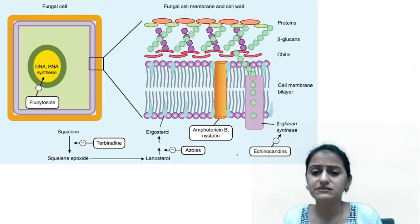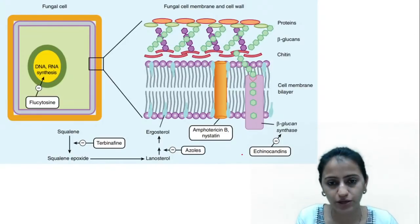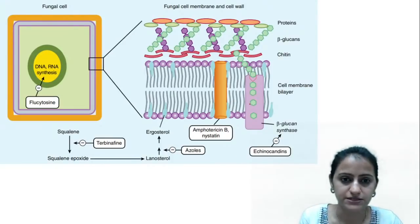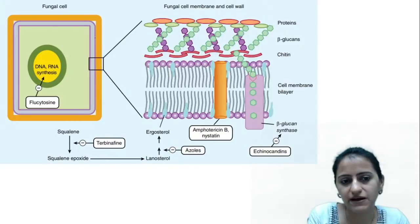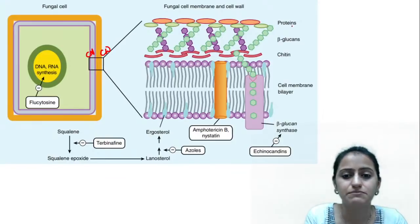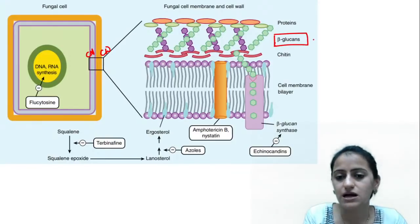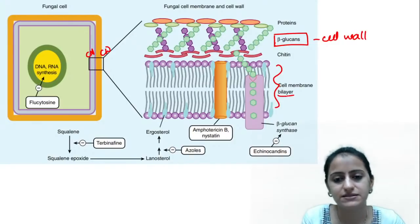Coming to the mechanism of action of the various antifungal drugs: this is the fungal cell — we have the cell wall and we have the cell membrane. Remember cell wall and cell membrane. You can see that beta-glucans are present in the cell wall, and underneath is a cell membrane bilayer.